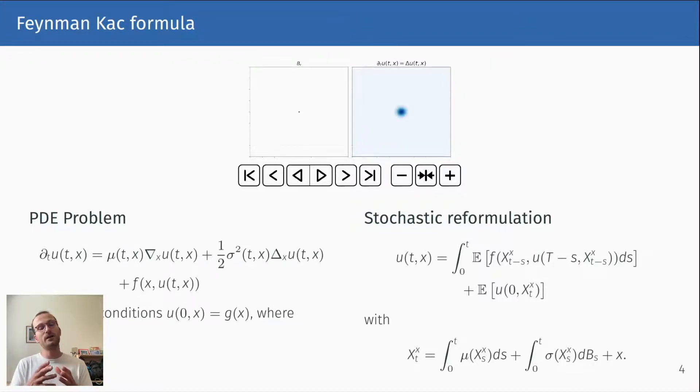This gives an equivalence between partial differential equation problems and stochastic trajectories or the expectation of the mean of stochastic trajectories. Essentially, when you're in high dimensions, this stochastic formulation is much more efficient to use than the PDE problem.